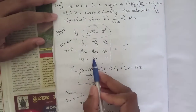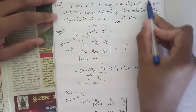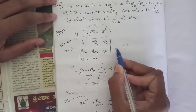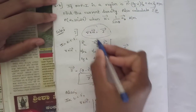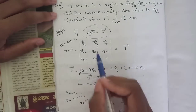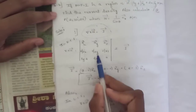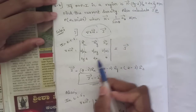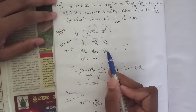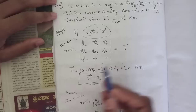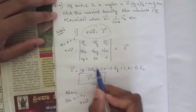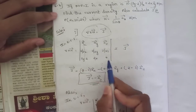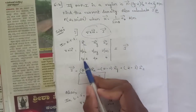Taking the determinant: for the ax component, (∂/∂y)(0) − (∂/∂z)(2x) = 0 − 0 = 0. For the ay component, (∂/∂x)(0) − (∂/∂z)(3y−2) = 0 − 0 = 0, since there are no z terms.